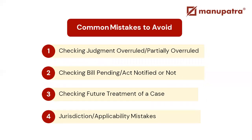Next, what are the common mistakes to avoid? Always check whether a judgment is overruled or not — never cite an overruled judgment, amended act, or pending act. Always check the future treatment of a case. Even if it hasn't been overruled, it may have been dissented in another case, which would take away its credibility. Always make sure to check the future treatment of every case you cite.